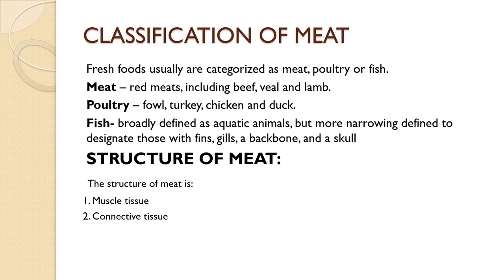Meat can be classified as meat, poultry or fish. Meat refers to red meat that includes all variety of beef, veal and lamb. These types of meats are commonly used. Turkey, chicken and duck are the categories of poultry, of which we consume chicken very frequently.